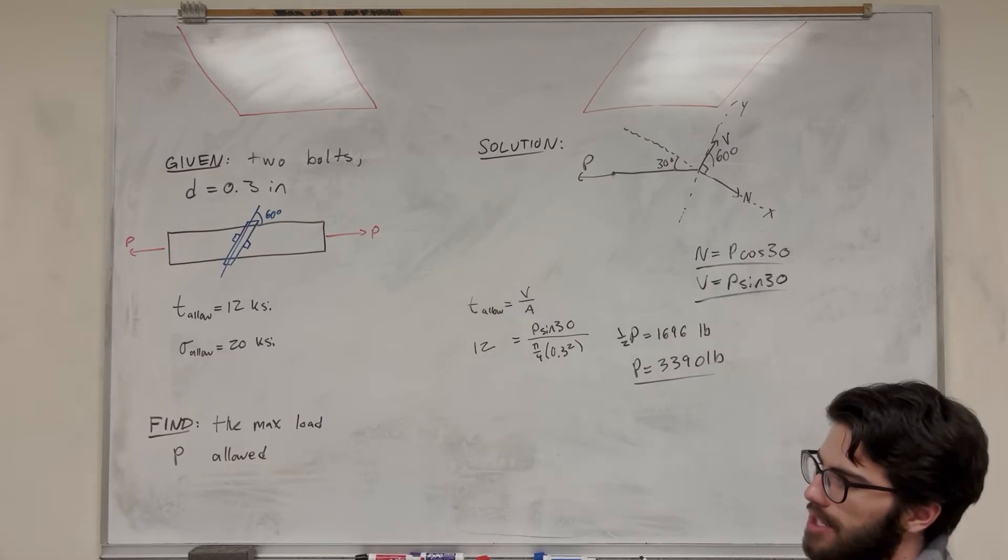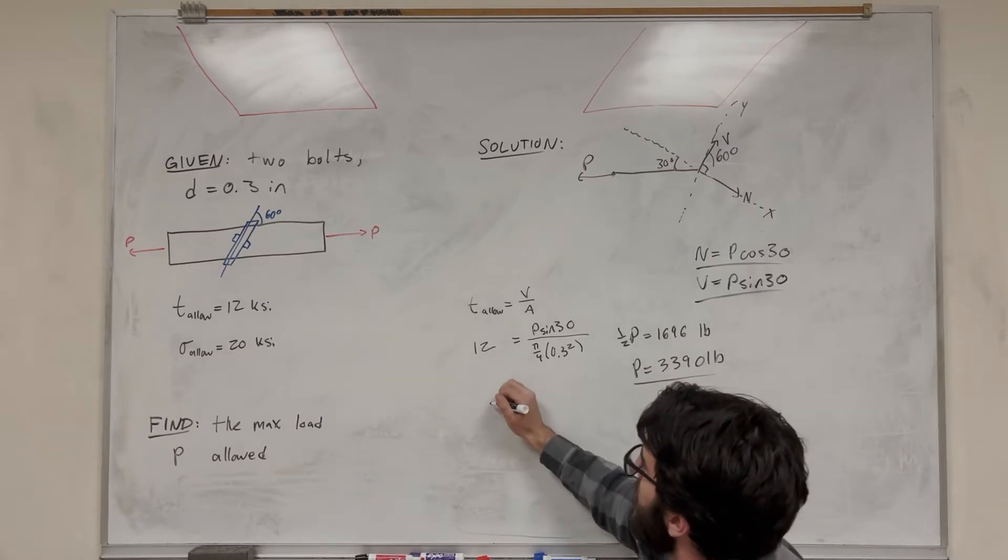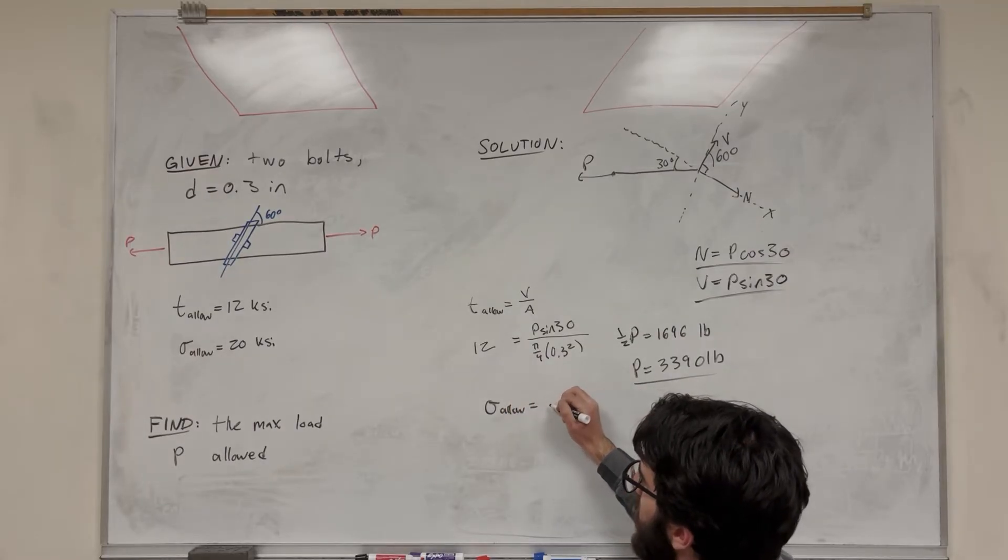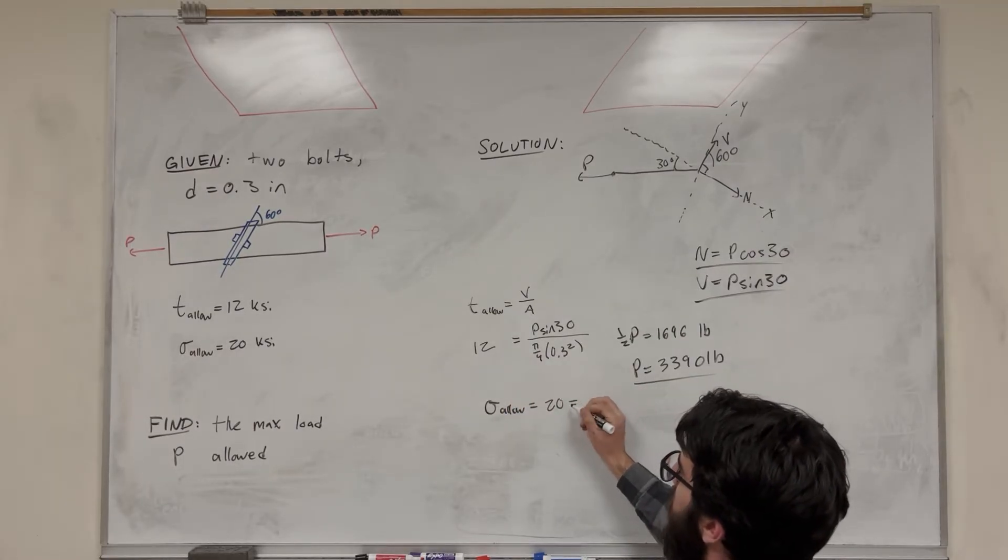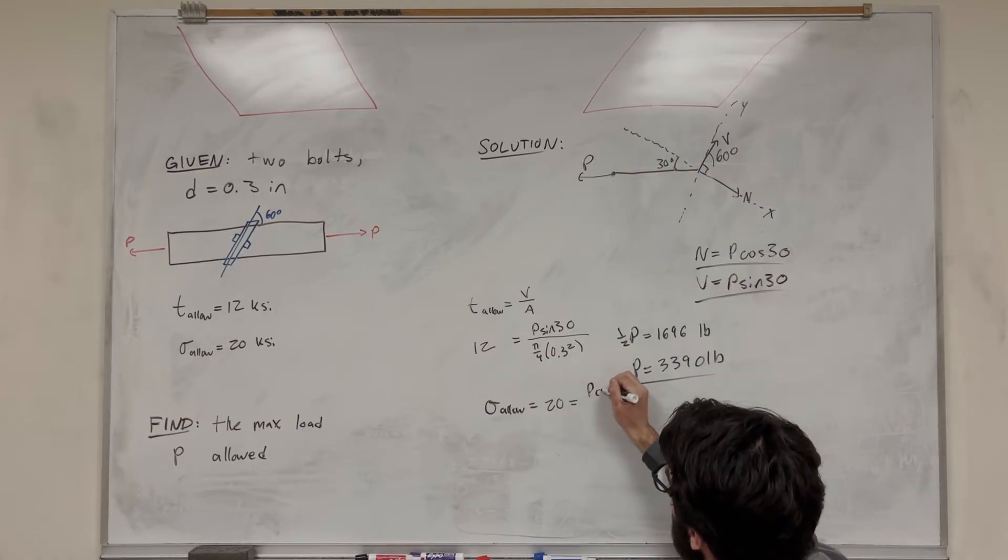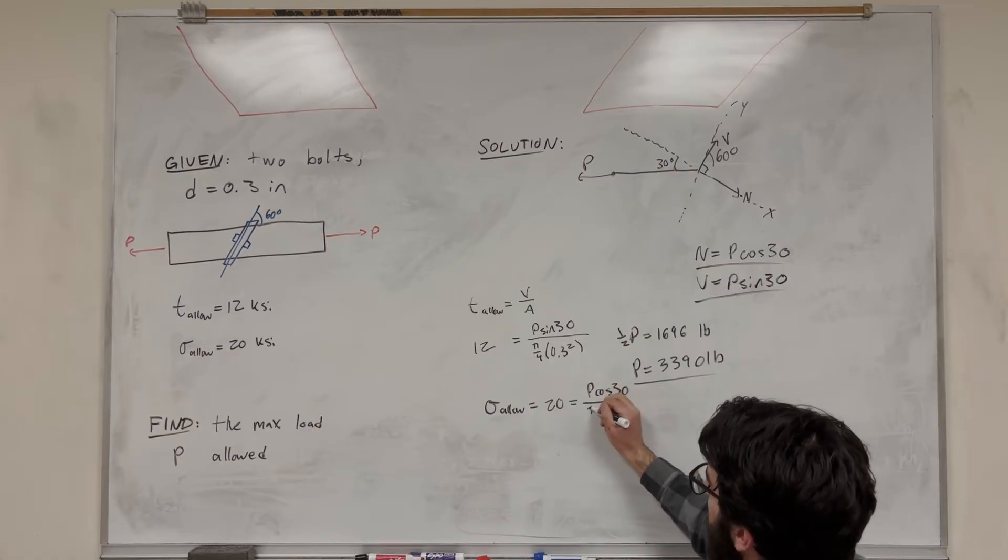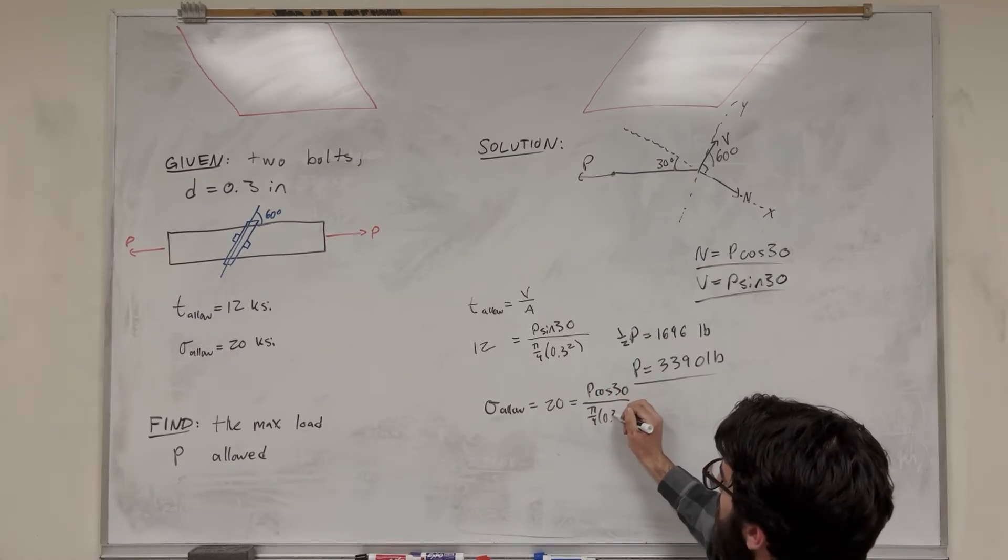But we're going to see what happens if it breaks on normal stress first. So let's do the normal stress allow. We know that that's equal to 20 ksi. And this is going to be normal over area. So let's take P cosine of 30, and then divide it by pi over 4, 0.3 squared.